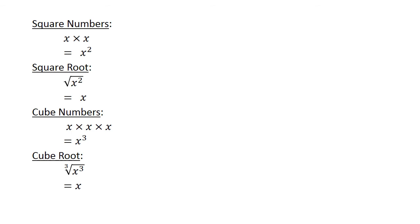Square numbers — now we are going to use algebra. x times x equals x to the power of 2. The square root of x to the power of 2 equals x. x times x times x equals x to the power of 3. The cube root of x to the power of 3 equals x.